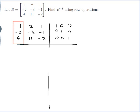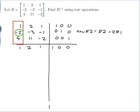I need a column of the identity here, which means I need a 1 here — and I have a 1 here already. So now I need a 0 here and here. To put the 0 there, my new row 2 is my old row 2 plus 2 of row 1. So: minus 2 plus 2×1 is 0; minus 3 plus 2×2 is 1; minus 1 plus 2×1 is 1; 0 plus 2×1 is 2; 1 plus 2×0 is 1; 0 plus 2×0 is 0.